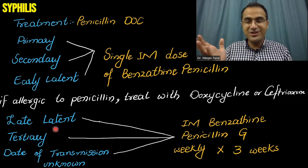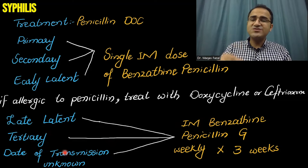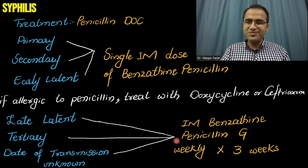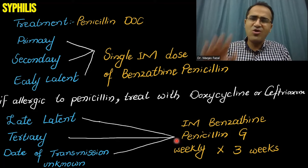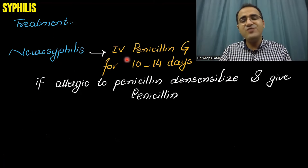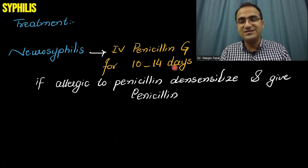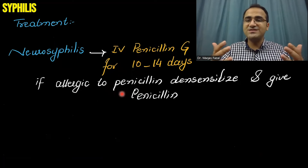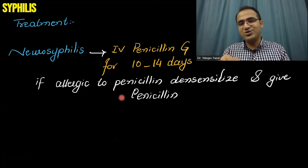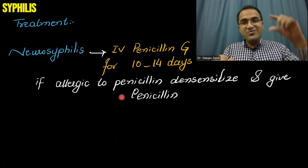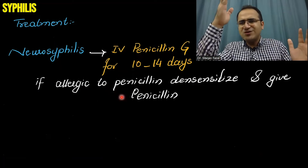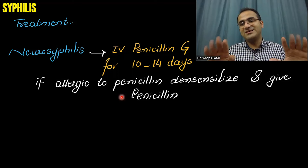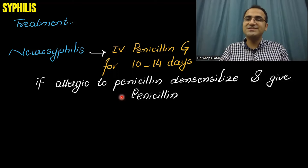In late latent syphilis — greater than one year after onset of symptoms — or tertiary syphilis or when the date of transmission is unknown, 2.4 million units of IM benzathine penicillin G weekly is given for three weeks. If the patient has neurosyphilis, IV penicillin G is given for 10 to 14 days. If the patient is allergic to penicillin in late latent, tertiary, or neurosyphilis, you must desensitize the patient to penicillin and give penicillin — it cannot be substituted in these advanced phases.